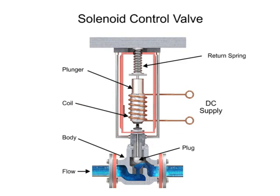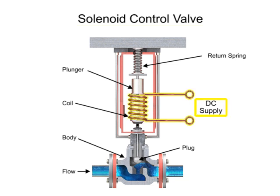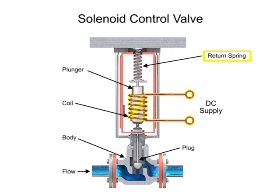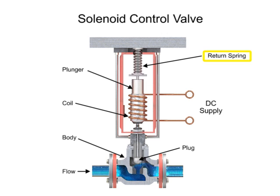For on-off control of the valve, a solenoid is used to actuate the valve to a fully closed or fully open position. Applying current to the coil generates a magnetic field that moves the plunger downward against the return spring. With zero current applied to the coil, the spring pulls the plunger upwards to the fully open position for a normally open state control valve.